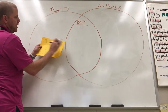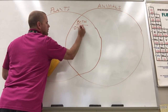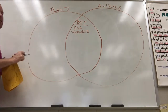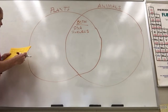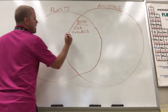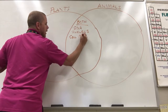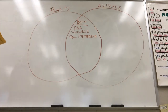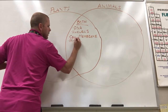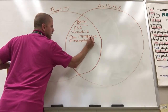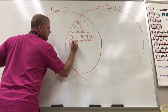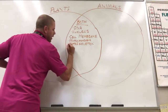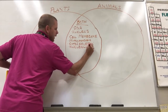Going left to right across the top: DNA applies to both, as does a nucleus — both plants and animals are eukaryotes, meaning they contain a nucleus and membrane-bound organelles. Cell membrane applies to both as well, though we'll add to that for plant cells later. They both have mitochondria, cytoskeleton, and a nucleolus.